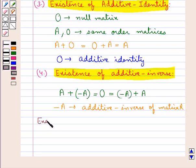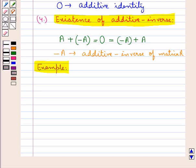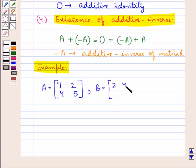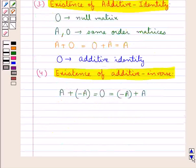Let's consider one example to verify the above properties of addition of matrices. We will consider three matrices A, B, and C of the same order. Let matrix A have elements 7, 2 in the first row and 4, 5 in the second row. Matrix B has elements 2, 4 in the first row and 3, 6 in the second row. Matrix C has elements minus 1, 2 in the first row and minus 4, 3 in the second row. First, let's verify the commutative property: A plus B equals B plus A.